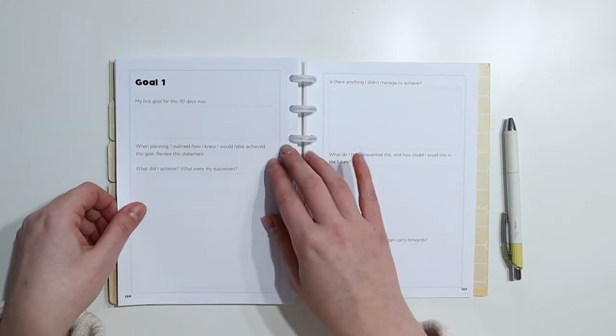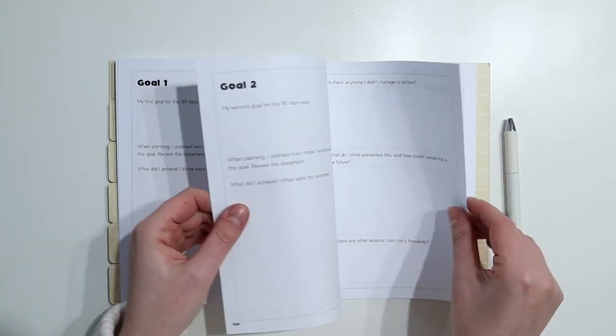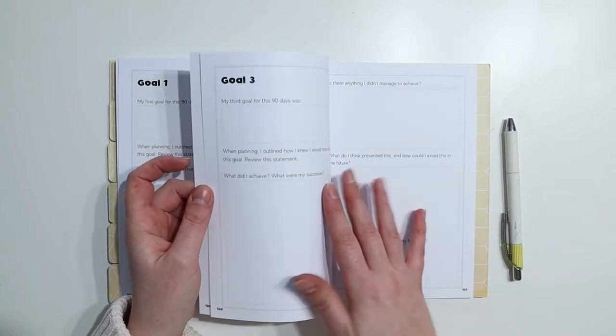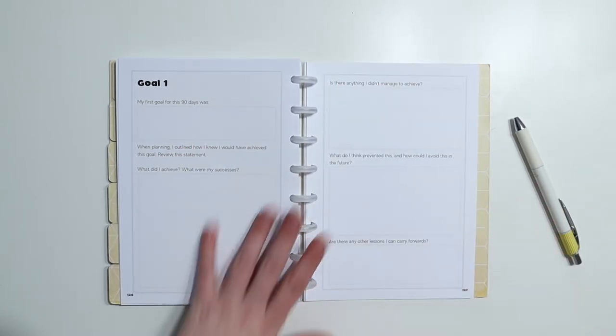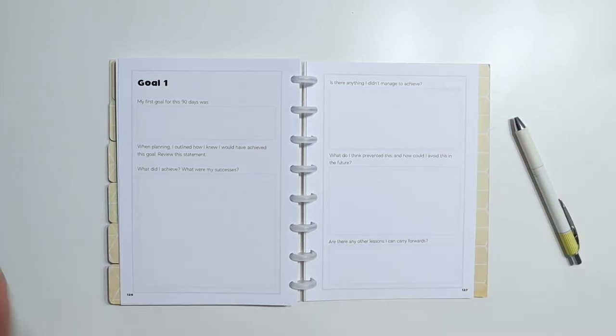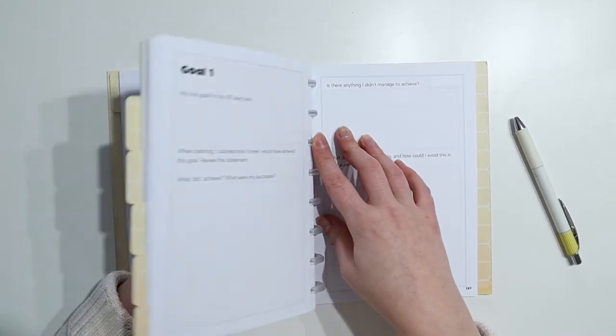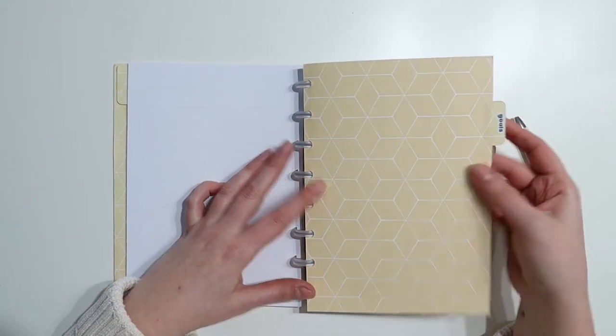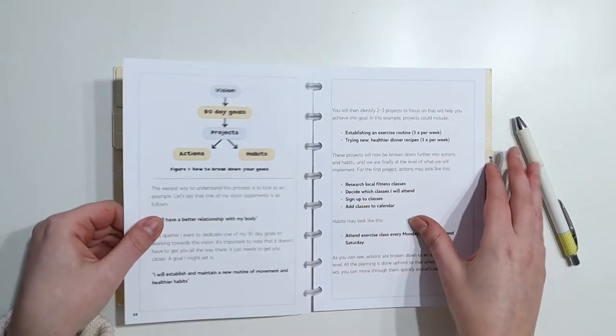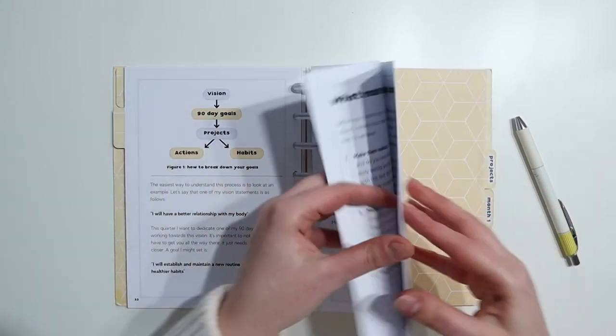So if we flick to these spreads, we have a double page spread for each of the goals. So I set myself two goals for this 90 day period and there were a maximum of three you could have set. Now, the great thing about this planner being disbound is that you can pull things in and out of it as you need to. So what I'm actually going to do is flip back to my goals section and I'm going to pull out the pages where I actually decided on my first goals.